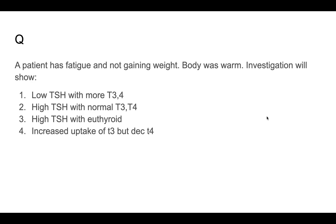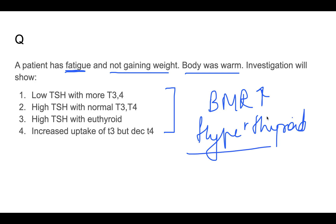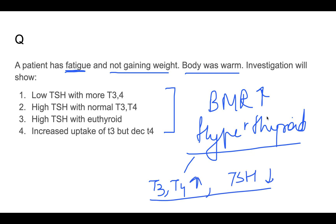Question five: a patient has fatigue, is not gaining weight, and the body is warm. You have to identify whether the patient is hyperthyroid or hypothyroid. Not gaining weight means basal metabolic rate is high, indicating hyperthyroidism. In hyperthyroidism, T3 and T4 are high and TSH is low. The answer is low TSH with elevated T3 and T4.